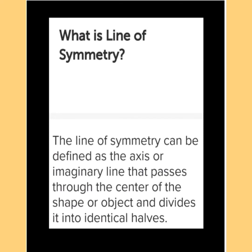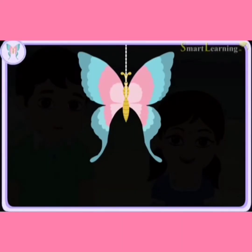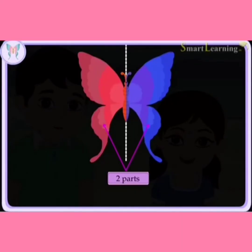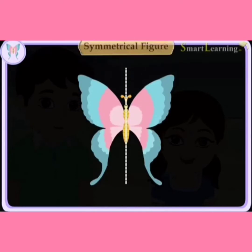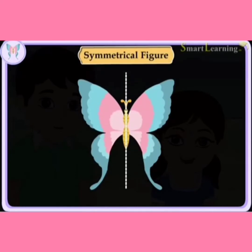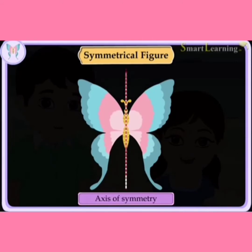Now, what is line of symmetry? The line of symmetry can be defined as the axis or imaginary line that passes through the center of the shape or object and divides it into identical halves. In this figure, the folding line divided the butterfly into two identical parts. Such a figure is known as a symmetrical figure, and this line is known as the axis of symmetry.